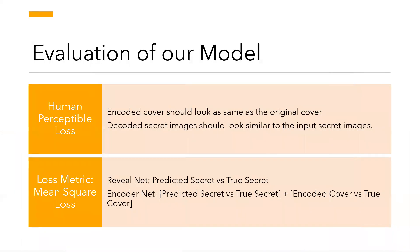For the evaluation of our model, we are using two parameters. The first is the human perceptible loss, according to which the encoded cover should be similar to the original cover for a human, and the decoded secret image should be similar to the input secret images. For training our model, we are using mean squared loss as a loss metric. For the reveal network, we are using mean squared loss only for the secret images, while for the encoded network, we are taking into consideration both the secret and the cover images.